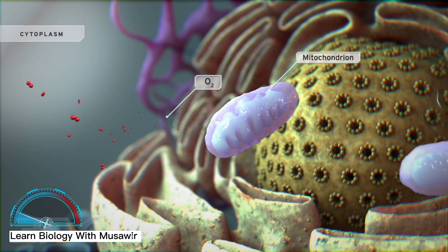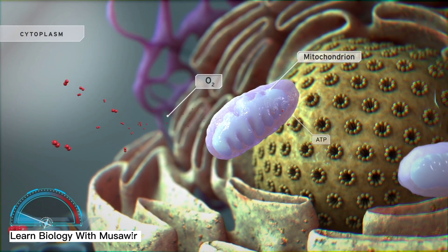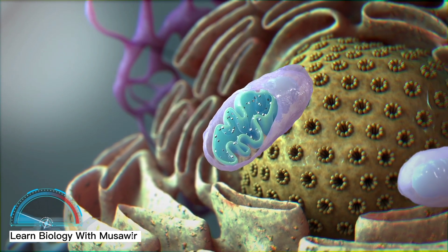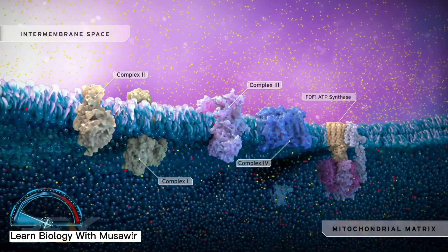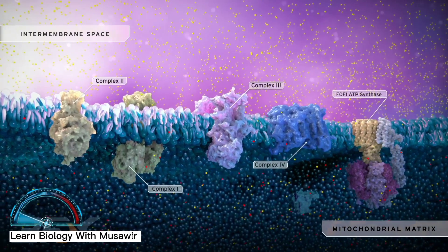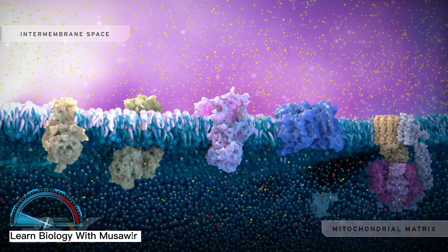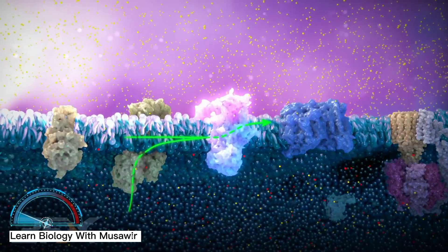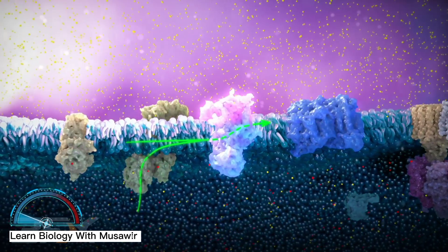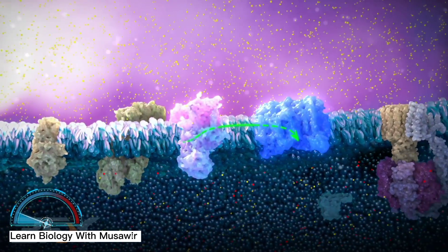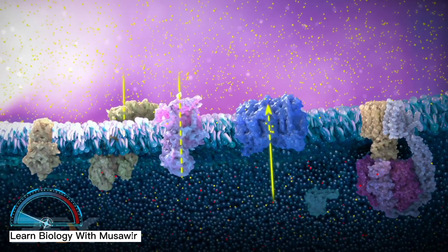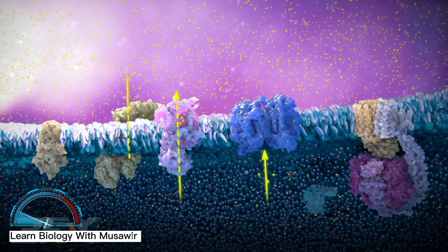Within the cell, oxygen is utilized in cellular respiration, which is carried out by proteins of the electron transport chain in mitochondria. The flow of electrons along the electron transport chain releases energy, which helps drive hydrogen ions across the inner membrane of the mitochondria.